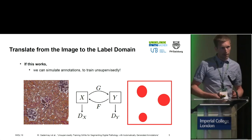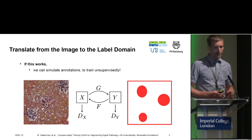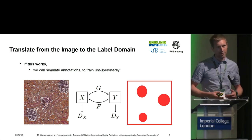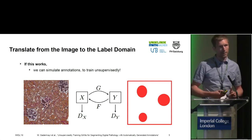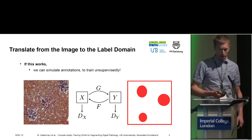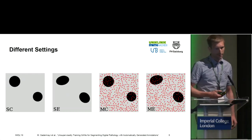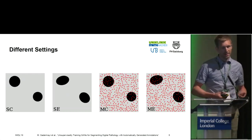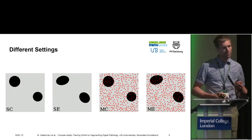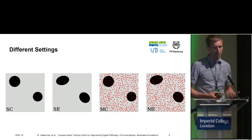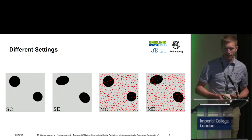What we did was take one dataset containing histological images and one dataset containing virtual labels. We virtually generate a set of label images and we try a translation. We know this is not trivial but we just tried first. So our first approach — the easiest approach — is just to take some binary masks. We took circles and generated such labels as you see on the very left here.